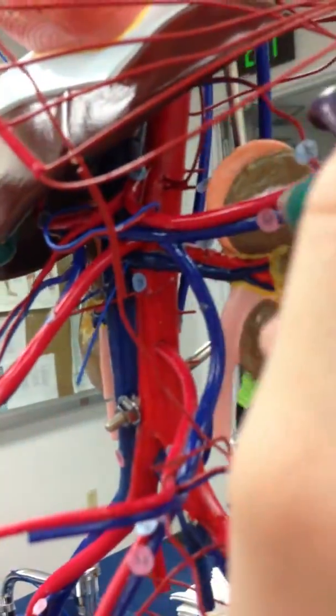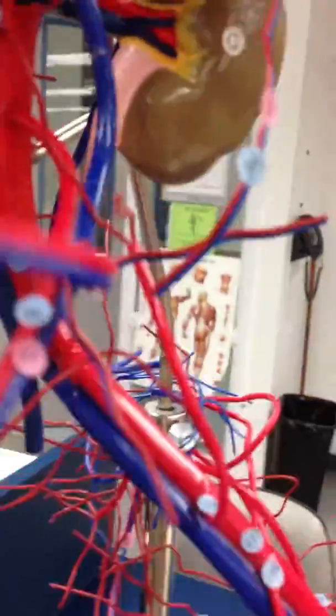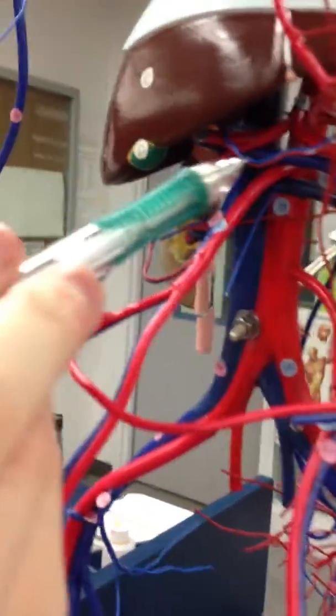And the splenic arteries. So it's number 83. We believe the left gastric artery is this circle here but we aren't 100% sure on that one yet.